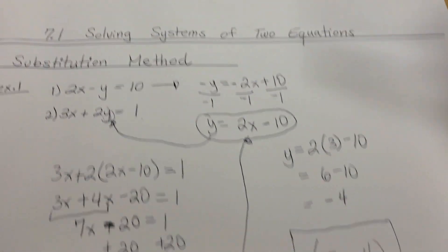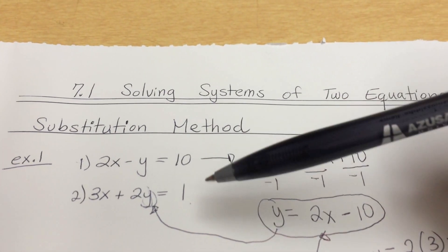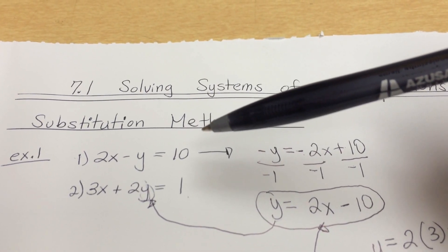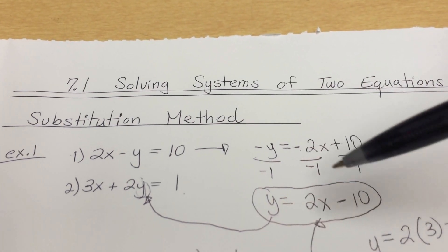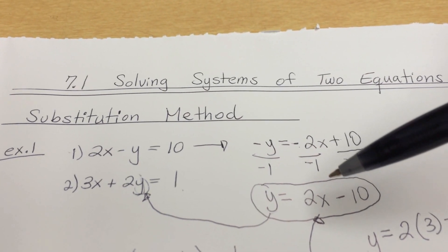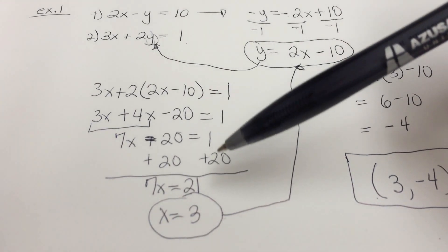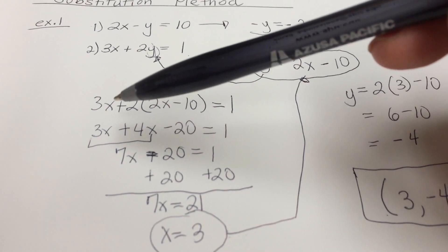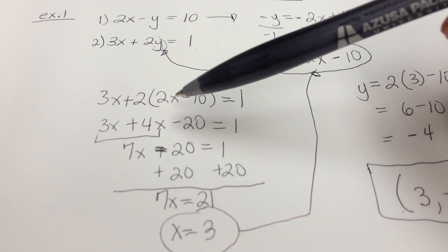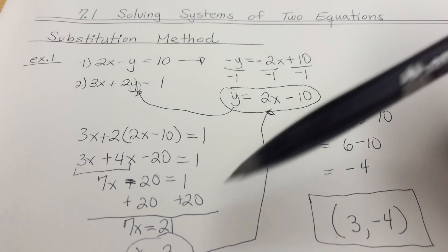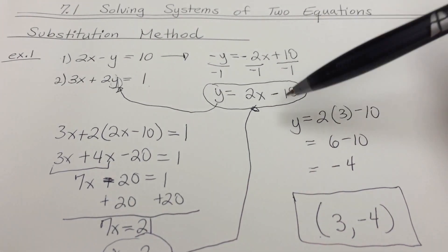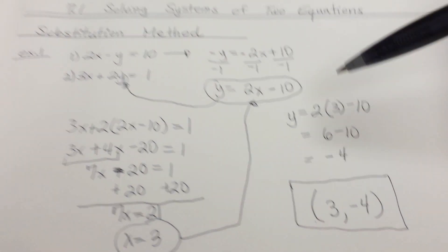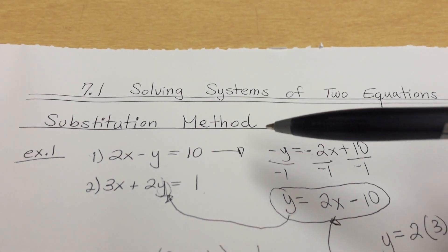All I do is take the first or second equation, manipulate it so you get either x or y by itself — try to find the one with a coefficient of 1 so it's easier. Once you have that, substitute into the other equation and do your algebra. This is where we only have one variable; if you still see both x and y, something went wrong, so go back and check your work.